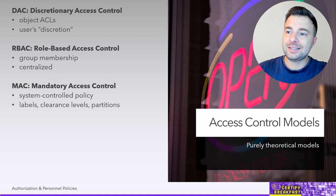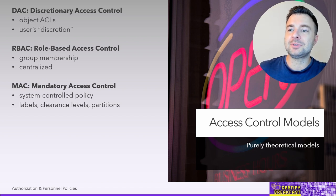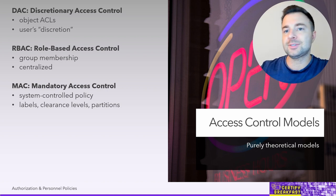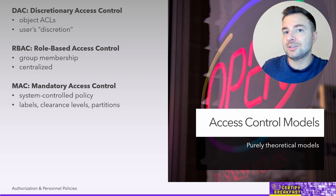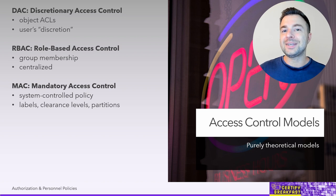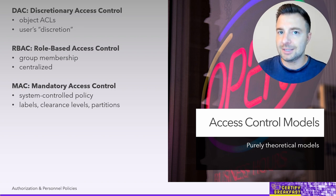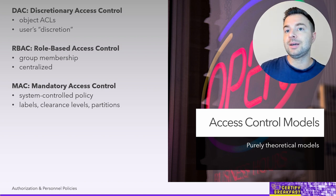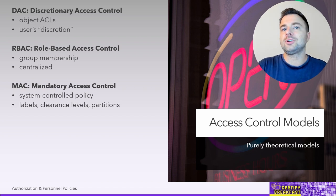Mandatory Access Control (MAC) is the most basic example of a centralized access control system. Its origins come from the military environment. Think about James Bond movies — James Bond has access to a document with a top secret clearance because James Bond also has top secret clearance. This is an implementation of mandatory access control. The way it works is we assign labels to objects — a folder, server, or application — and on that label is a type of security clearance: confidential, secret, top secret, and so on.